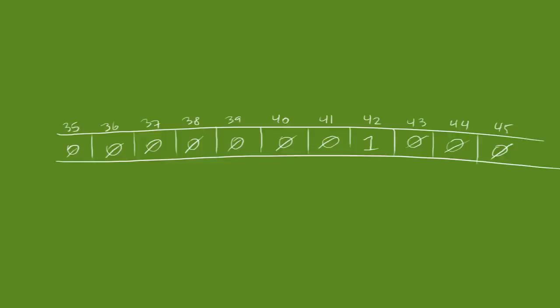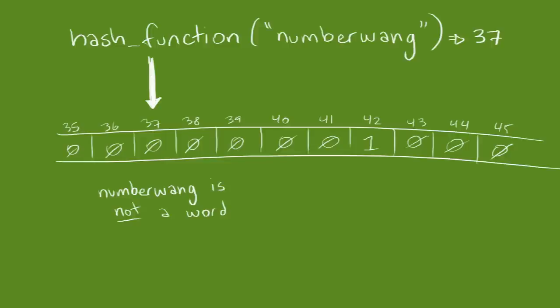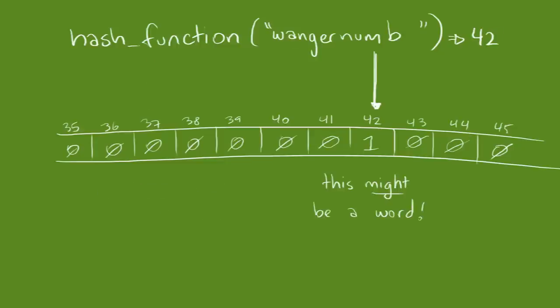So let's say that we let collisions happen sometimes with a much smaller hash. If we hash a word and find a zero at that memory location, we know that that word can't possibly exist. On the other hand, if we find a 1, all we know is that our word is probably in the dictionary. It could be the result of a hash collision instead.